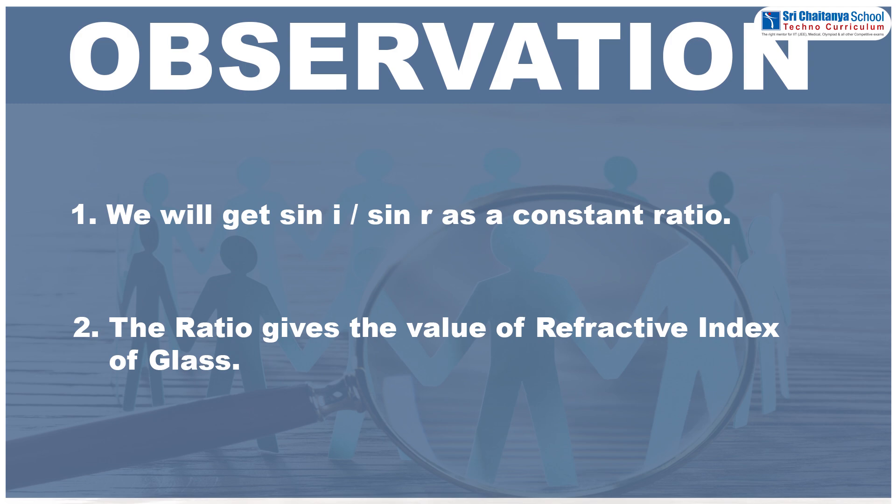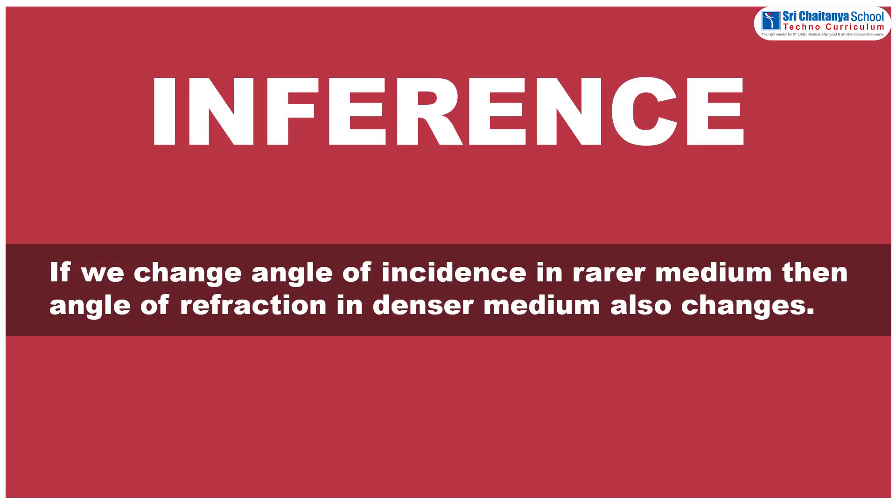Observation. We will get sine i by sine r as constant ratio. And this ratio gives the value of refractive index of glass. Inference. If we change angle of incidence in rarer medium, then angle of refraction in denser medium also changes.